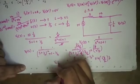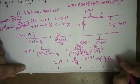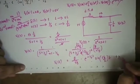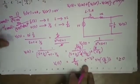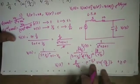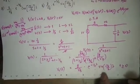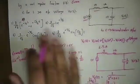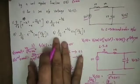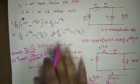So Vc(t) for t greater than 0 is equal to (2/√3) · e^(-t/2) · sin(√3t/2). This matches the fourth option, which is the correct answer.